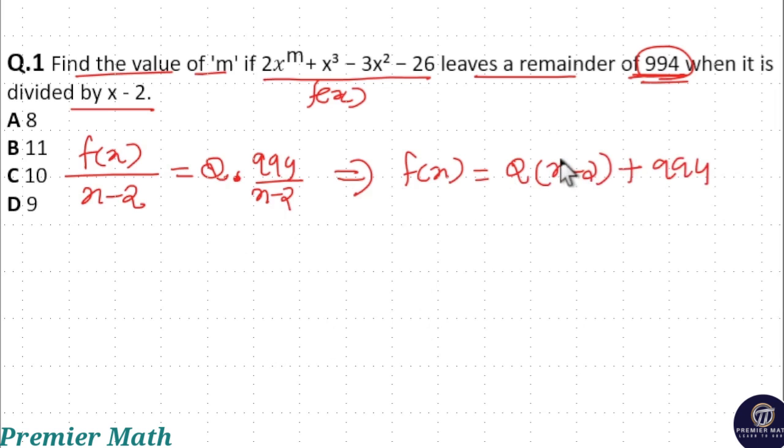When I put x = 2 here, this becomes f(2). f(2) equals 994 because 2 - 2 = 0, so the whole term becomes 0. So f(2) = 994 means substitute x = 2 into the original equation.